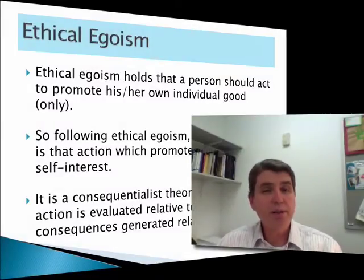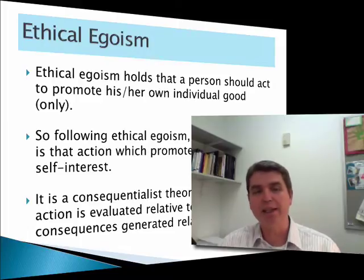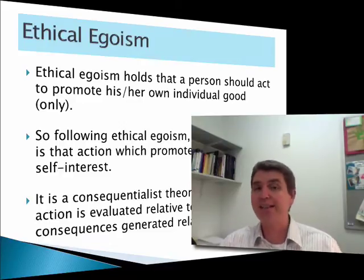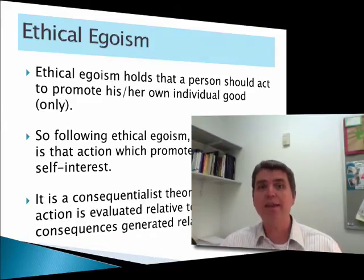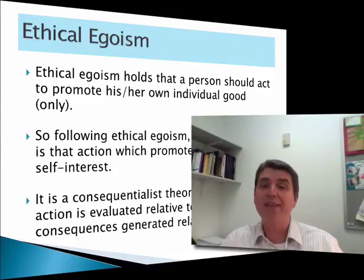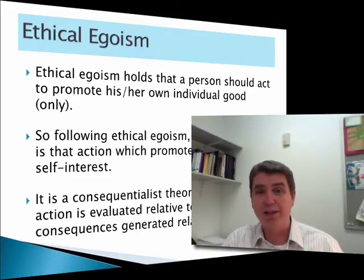Probably the most basic consequentialist ethical framework is ethical egoism. All ethical egoism really means is that what is ethical is what furthers your individual best interests. If it doesn't further your best interests, then it's not ethical. If it does, it is. This is a consequentialist theory because we're looking at the outcome about whether you're made better off or not as a result of the action you take.